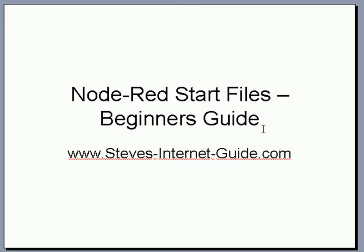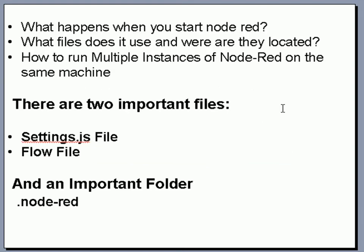In this video I want to take a look at the Node-RED start files - the files that are used when we start up Node-RED. We'll be starting Node-RED from the command line, and we're going to see what happens when you start Node-RED, what files it uses and where those files are located. I'm also going to show you how to run multiple instances of Node-RED on the same machine. There are two important files: the settings.js file and the flows file, and they're located in the .node-RED folder in the user home directory.